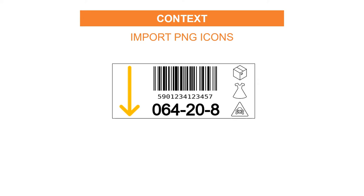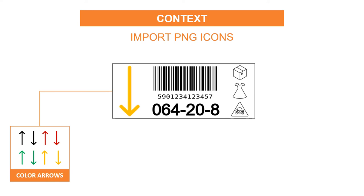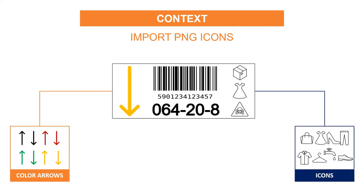Then you need to import the different icons — these are PNG files. First, the color arrows, which you can store in a dedicated folder, and then the information icons. I store them in three different folders depending on the category. You need to download them in advance and store them in local folders.